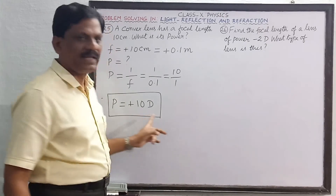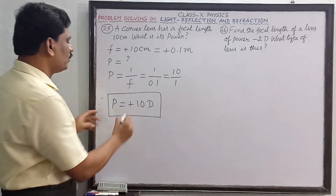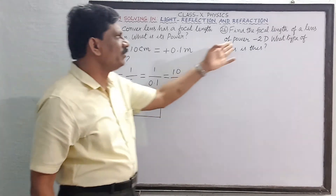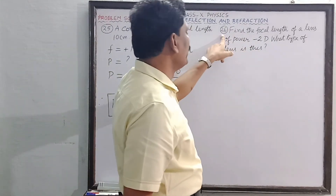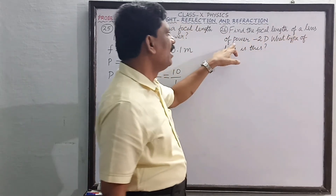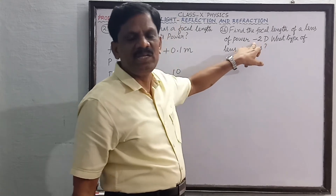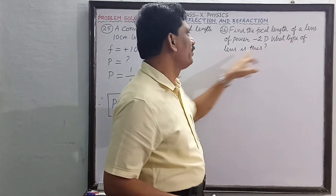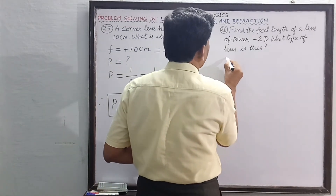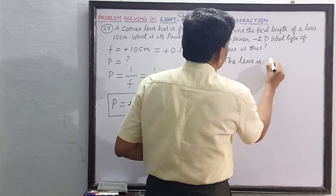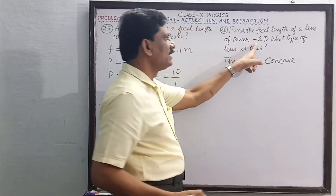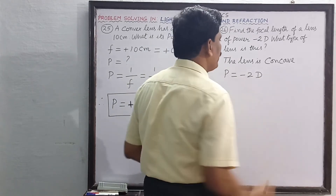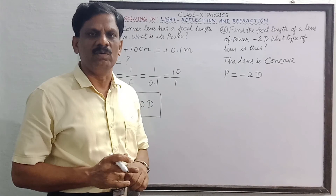The power is positive because the focal length is positive, as the given lens is a convex lens. Problem number 26: Find the focal length of a lens of power minus 2 diopter. Since the power is negative, this is a concave lens. Power P equals minus 2 diopter.